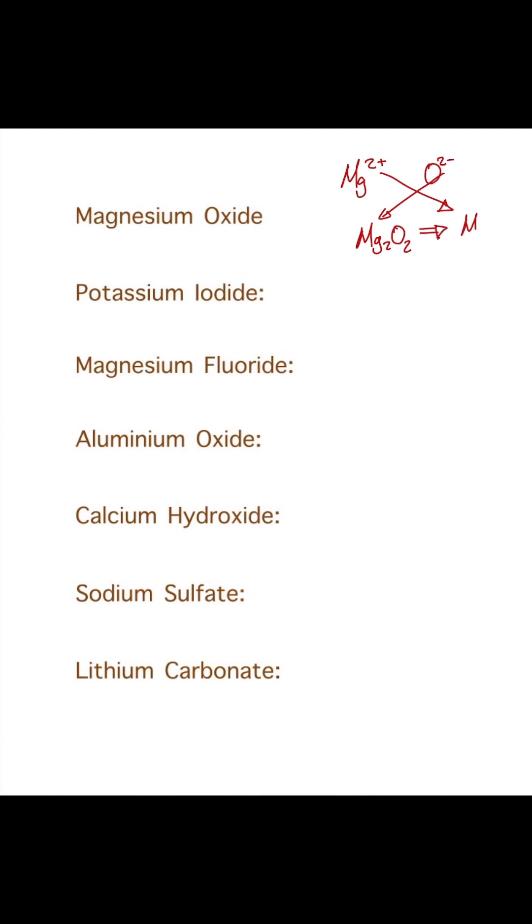Our next example is potassium iodide. Potassium is in group one, so it has K plus. Iodine is in group seven, which gives us I one minus. These are both ones, so when you swap them around it gives us a ratio of 1 to 1, so that gives us KI.